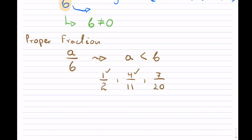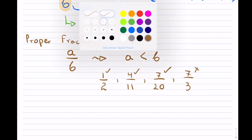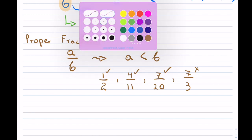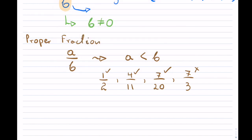7 over 20 is a proper fraction. But if you wanted to write 7 over 3, notice that 7 is bigger than 3. This would not be a proper fraction, and it brings about the definition for improper fraction.